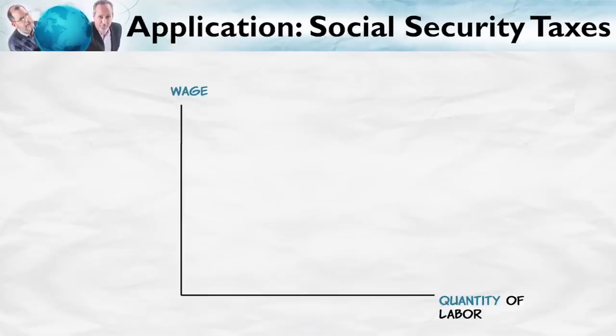Let's do an application: Social Security taxes. Last time we showed that the legal incidence of Social Security taxes has no bearing on the economic incidence, but we didn't say what the economic incidence actually is. So let's do that now. We're going to have the price of labor — the wage — on one axis and the quantity of labor on the other. The whole question now boils down to: is the demand for labor more elastic than the supply of labor, or vice versa?